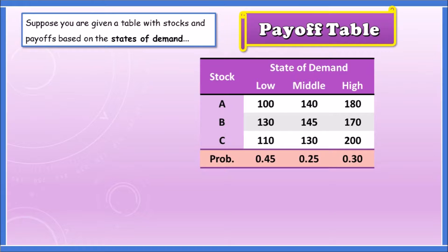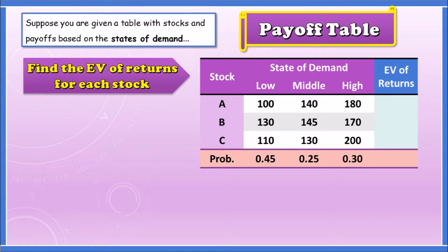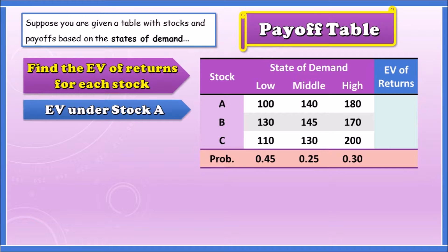Now, suppose you're given a table of stocks and payoffs based on states of demand. Looking at the payoff table: Stock A has 100 (low), 140 (middle), and 180 (high). Stocks B and C follow similarly. To calculate the expected value of returns for each stock, let's look at Stock A first — we'll work with its row and the given probabilities.